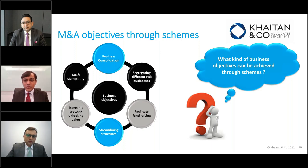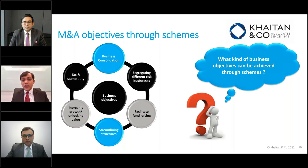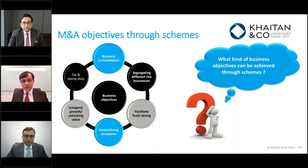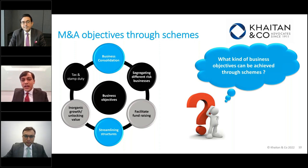Another objective achievable through schemes is unlocking value. For example, there is a listed entity with multiple businesses run through separate subsidiaries, and the client wants to list one of the businesses without doing an IPO — there is no requirement to raise funds. By doing a demerger from a listed entity and creating a separate listed entity, automatic listing without an IPO is possible only through a scheme. Examples include Reliance Industries, IIFL, and multiple groups who have achieved multiple listings without an IPO process.